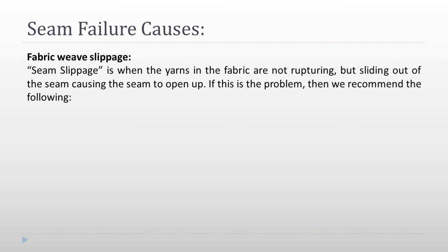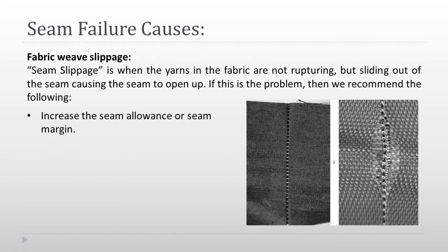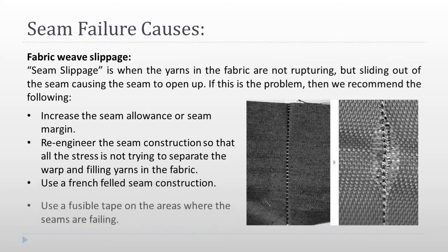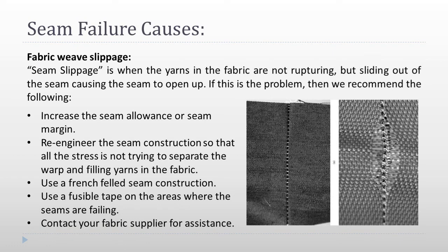Seam failure causes. Fabric yarn slippage: seam slippage is when the yarns in the fabric are not rupturing but sliding out of the seam, causing the seam to open up. If this is the problem, recommendations include: increase the seam allowance or seam margin, re-engineer the seam construction so that all the stress is not trying to separate the warp and filling yarns in the fabric, use a French fell seam construction, use a fusible tape on the areas where the seams are failing, and contact your fabric supplier for assistance.